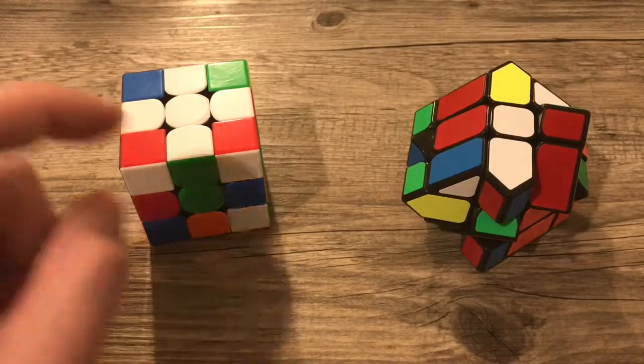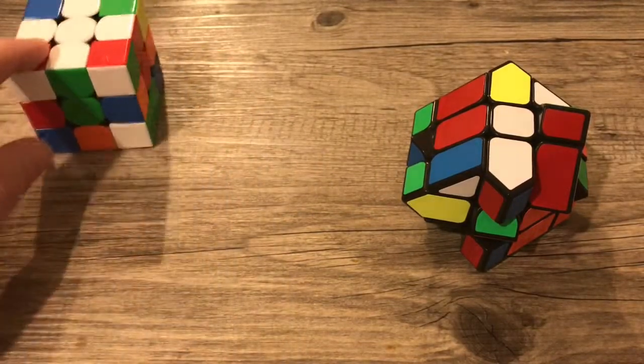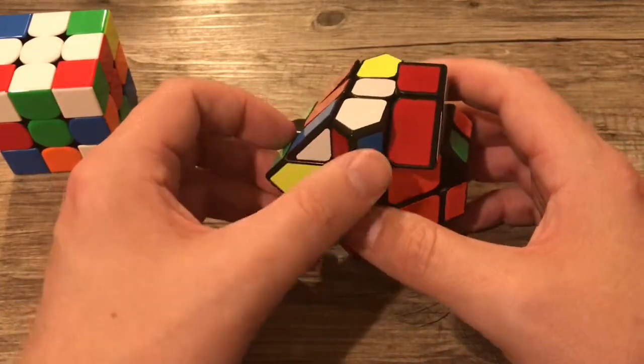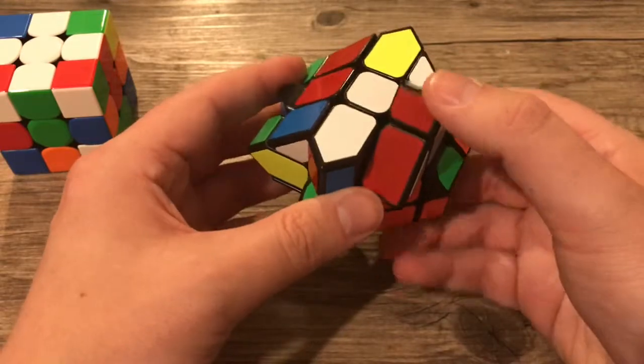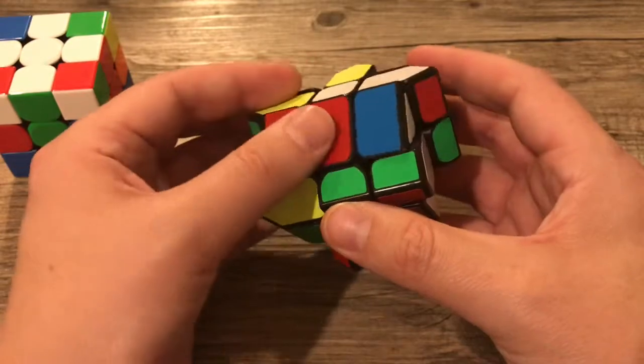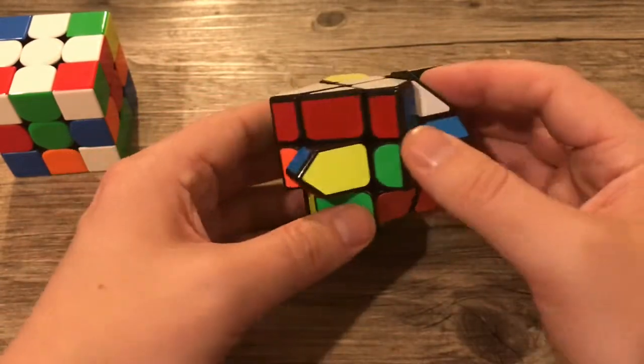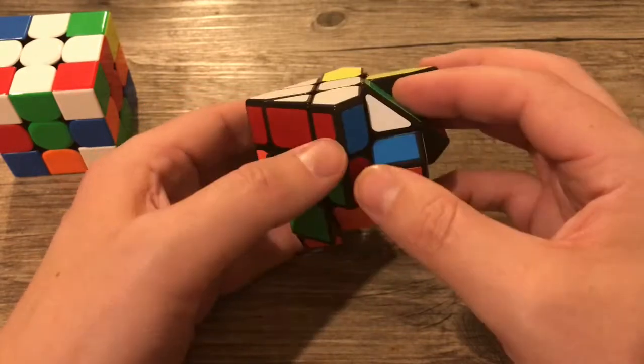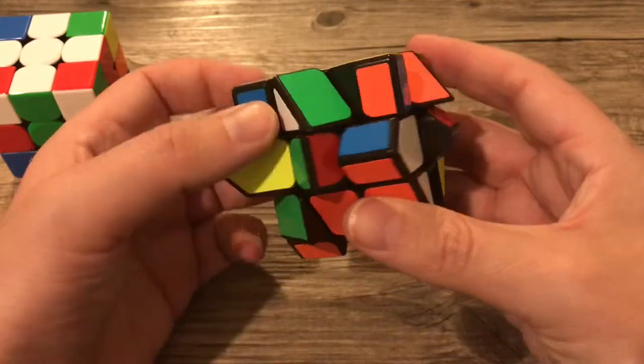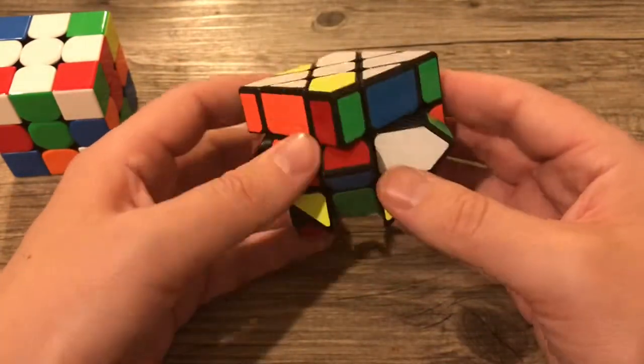So the first step on the Fischer Cube is going to be getting the white cross like you would on a 3x3. We already have one piece and it's a red blue center. Now notice this piece has red on it, so when we put it up there we want to make sure it is in the appropriate location. That does look good. Red and red. This is a blue side. There's another piece right here. I'm just going to insert that just like we would on a 3x3, and now the last one.